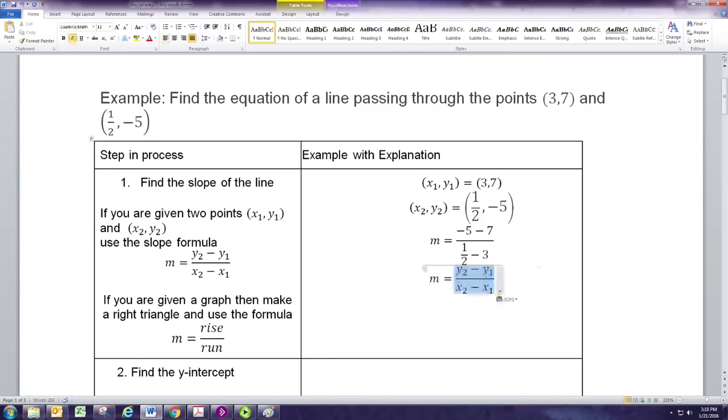And we just want to simplify that. So we'll subtract first. And at the top, we get negative 5 and negative 7 is negative 12. On the bottom, we have one-half minus 3, or one-half minus 6-halves, which would be negative 5-halves. And dividing by negative 5-halves is the same as multiplying by 2 fifths. The negatives will cancel, and we'll get 2 times 12 is 24 over 5. So we got our slope.